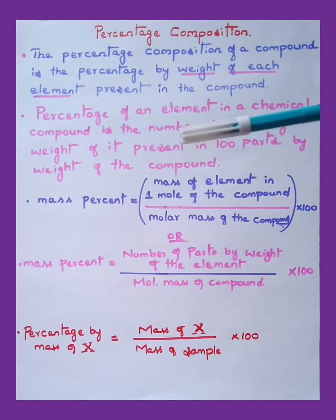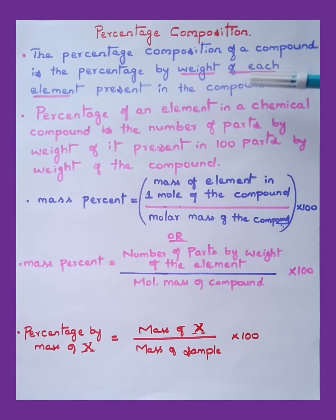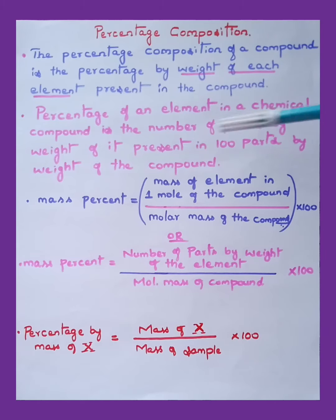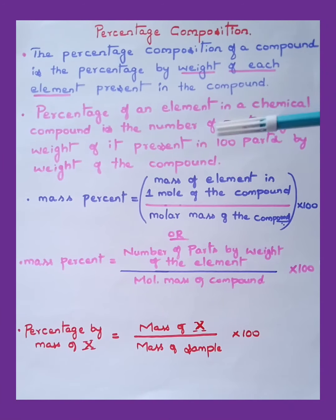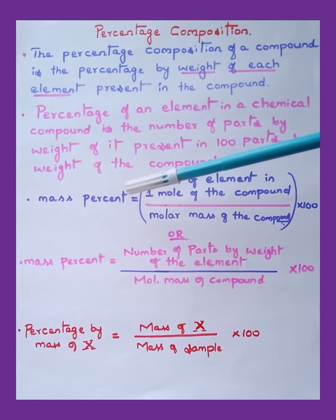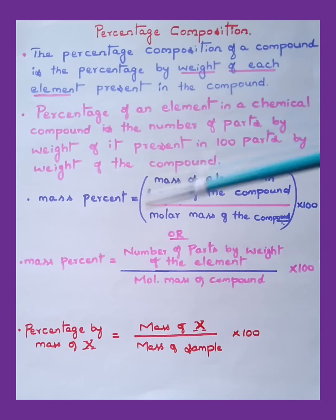Let's move into the topic now. Percentage composition: the percentage composition of a compound is the percentage by weight of each element present in the compound. The formula is: mass percent is equal to mass of element in one mole of the compound divided by molar mass of the compound, into 100.